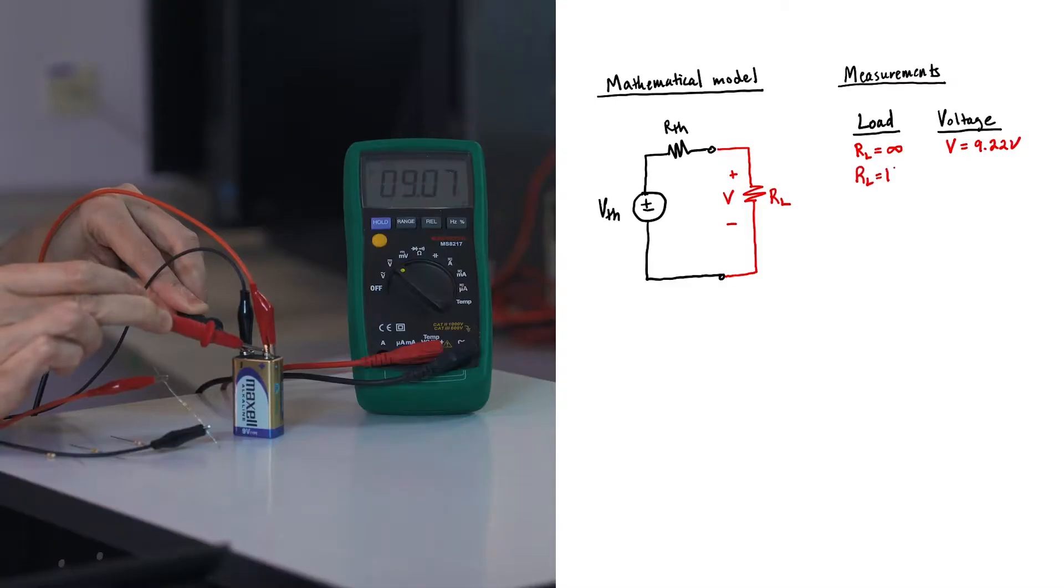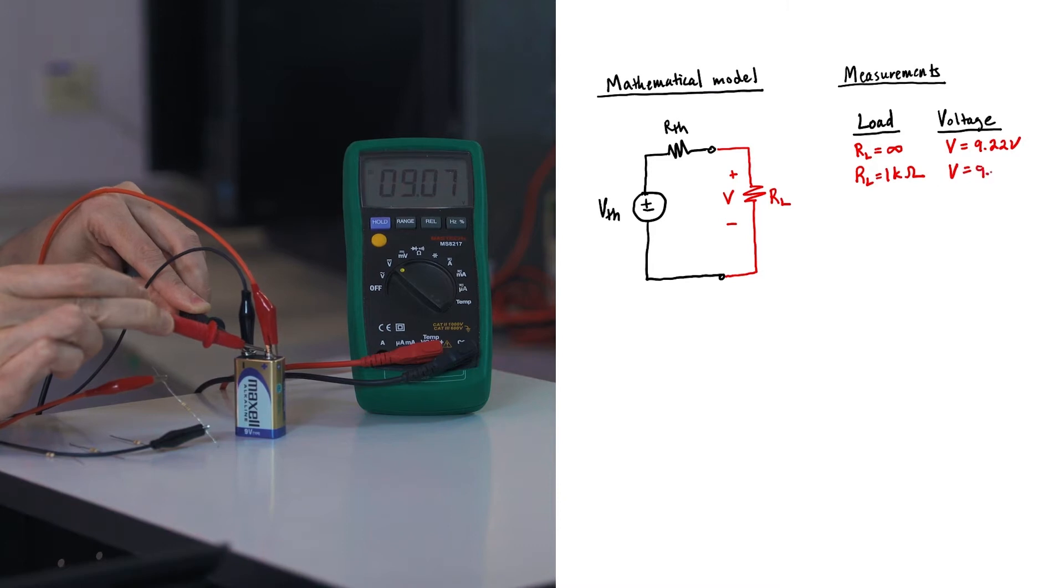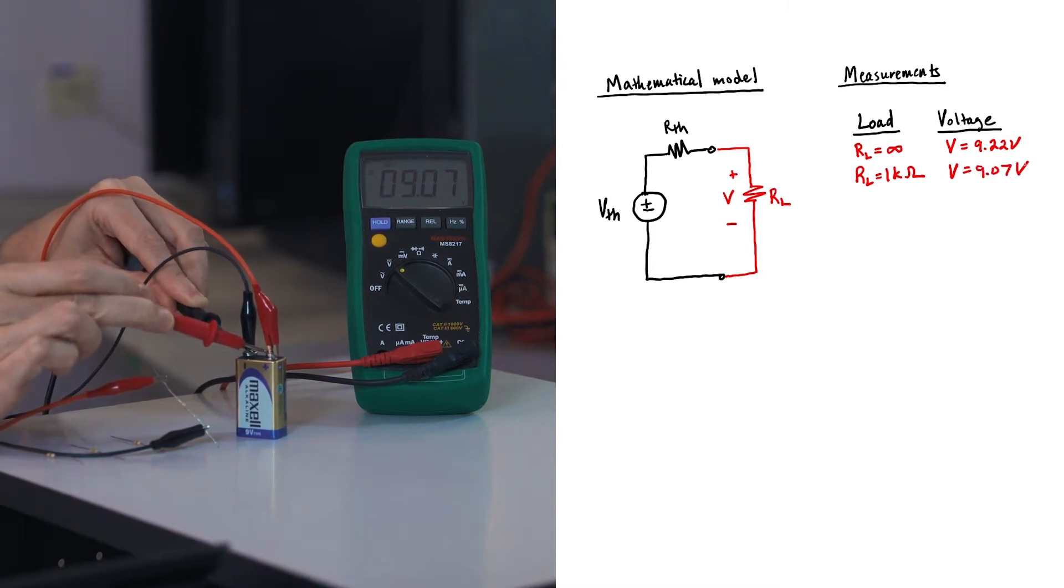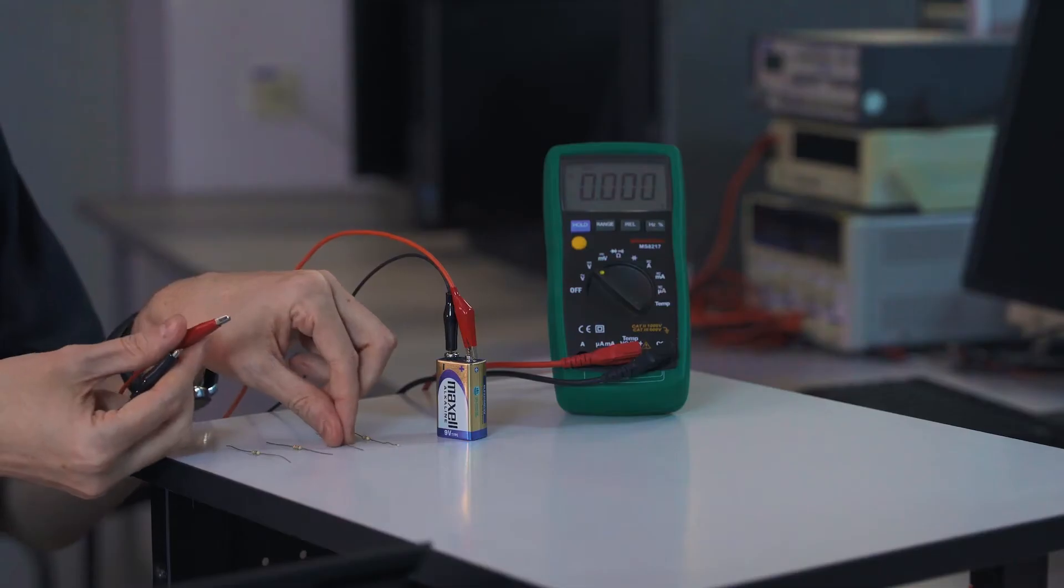When hooked up to the resistor, it looks like the voltage has dropped to 9.07 volts. The next resistor I have here is 220 ohms.